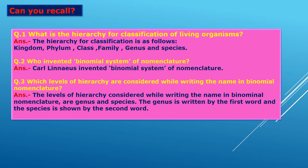Who invented the binomial system of nomenclature? The scientist Carolinus invented the binomial system of nomenclature. Which levels of hierarchy are considered while writing the name in binomial nomenclature? For writing the name in binomial nomenclature we consider genus and species — the first word is genus and the second word is species.